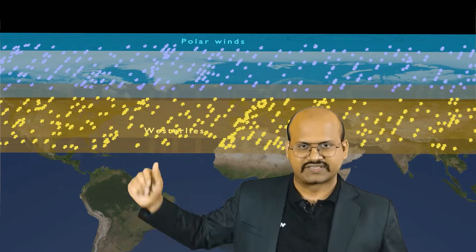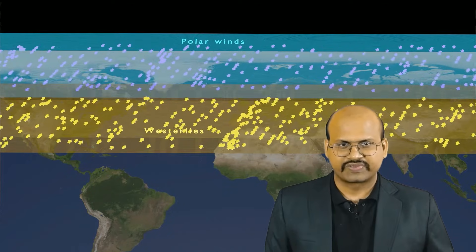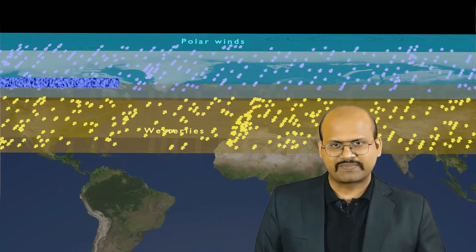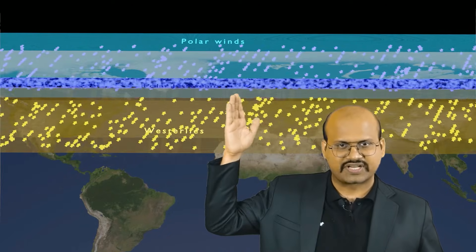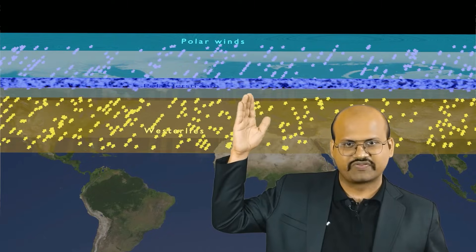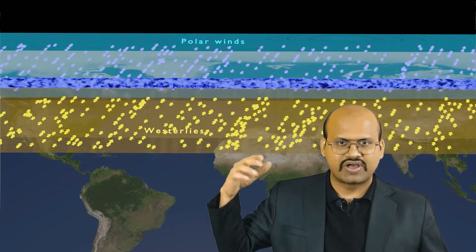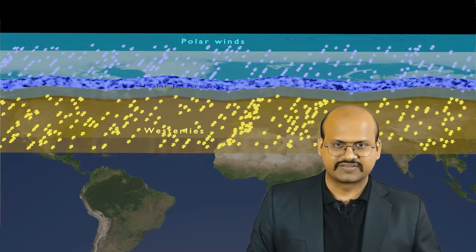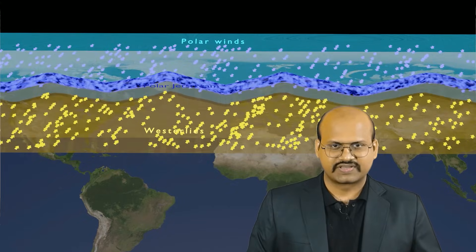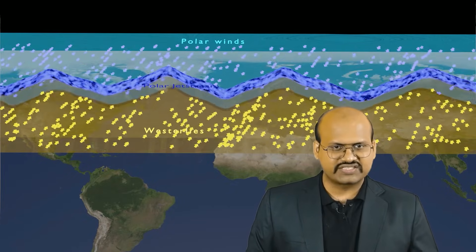Over these air masses we see that jet streams are present — this is the polar jet stream, which is formed at the intersection of these two air masses. Now this jet stream does not flow in a straight line.